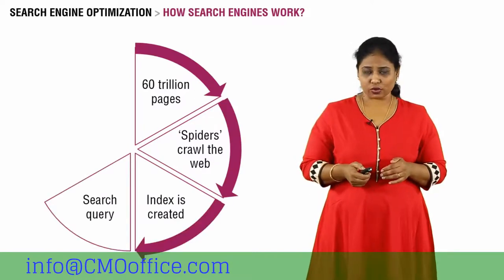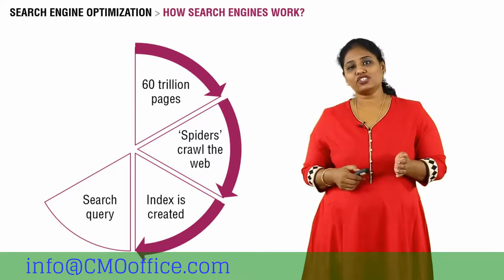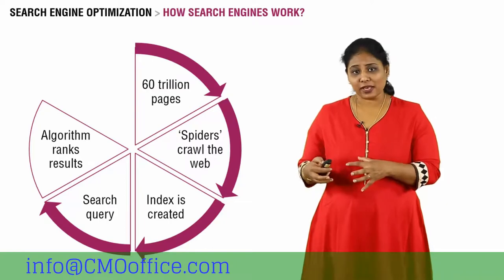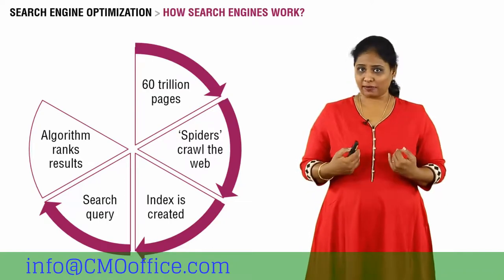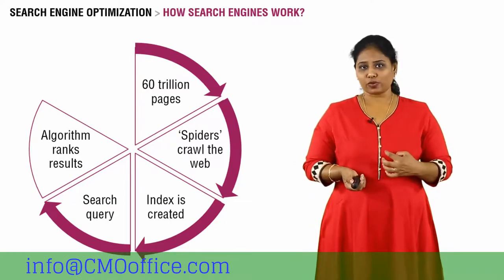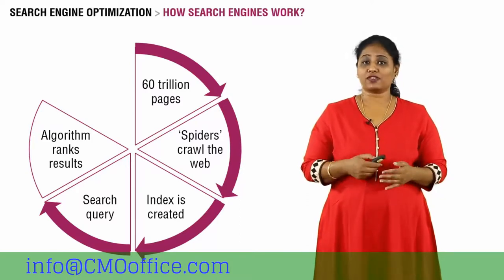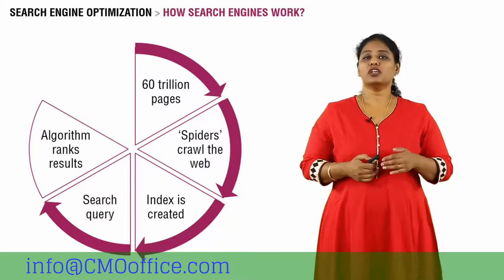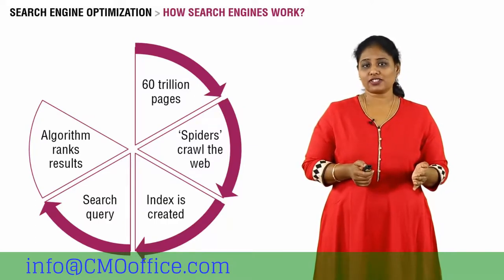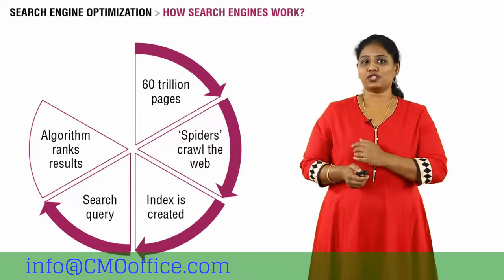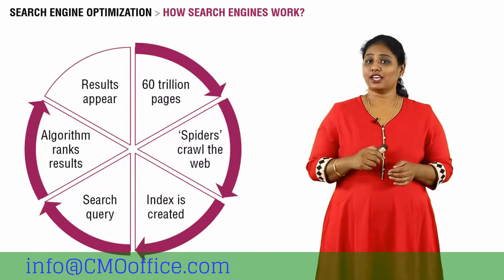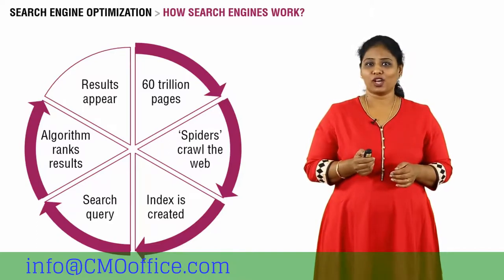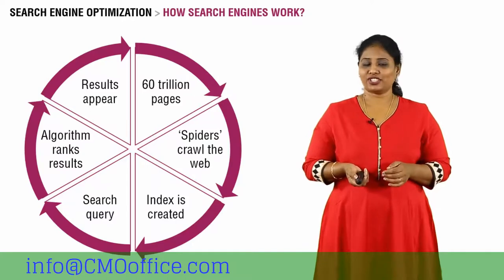When you enter a search query, Google searches the index through tools called algorithms, which find the best results and rank them in order. For example, if your search query matches a thousand pages out of the 60 trillion, the Google algorithm ranks those thousand pages so it knows what to display on the first page, the second page, and so on — all within the blink of an eye.